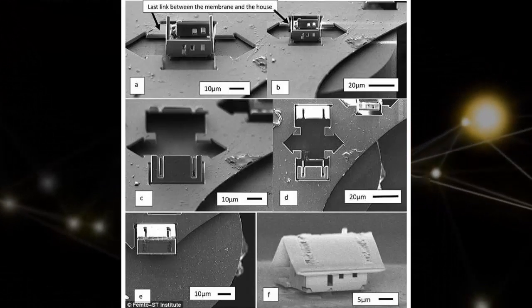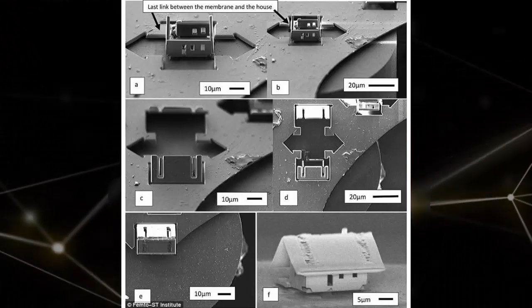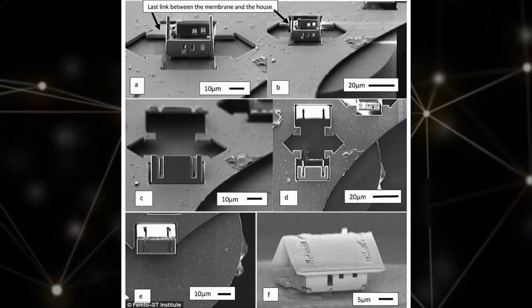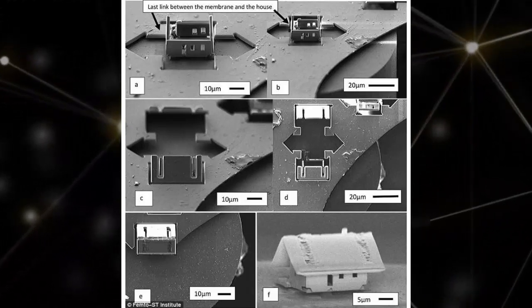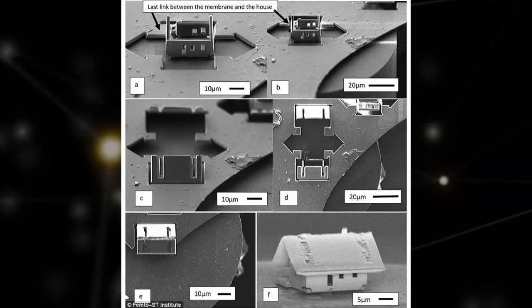The new nanorobotics system, called μRobotex, uses a combination of technologies, including a tiny maneuverable robot, a focused ion beam, and a gas injection device.